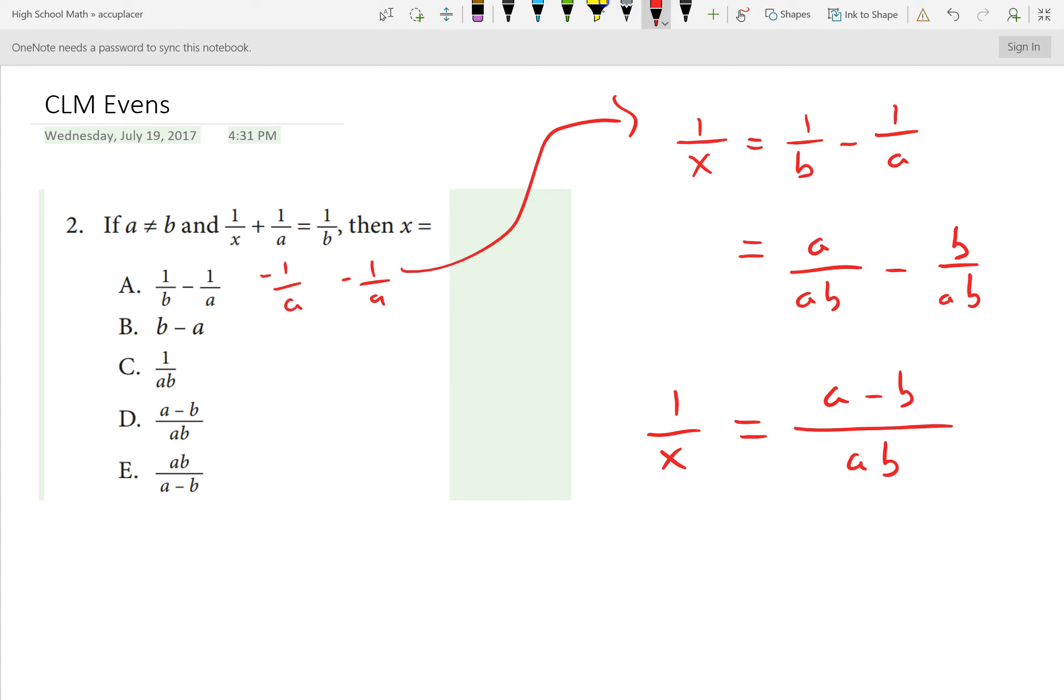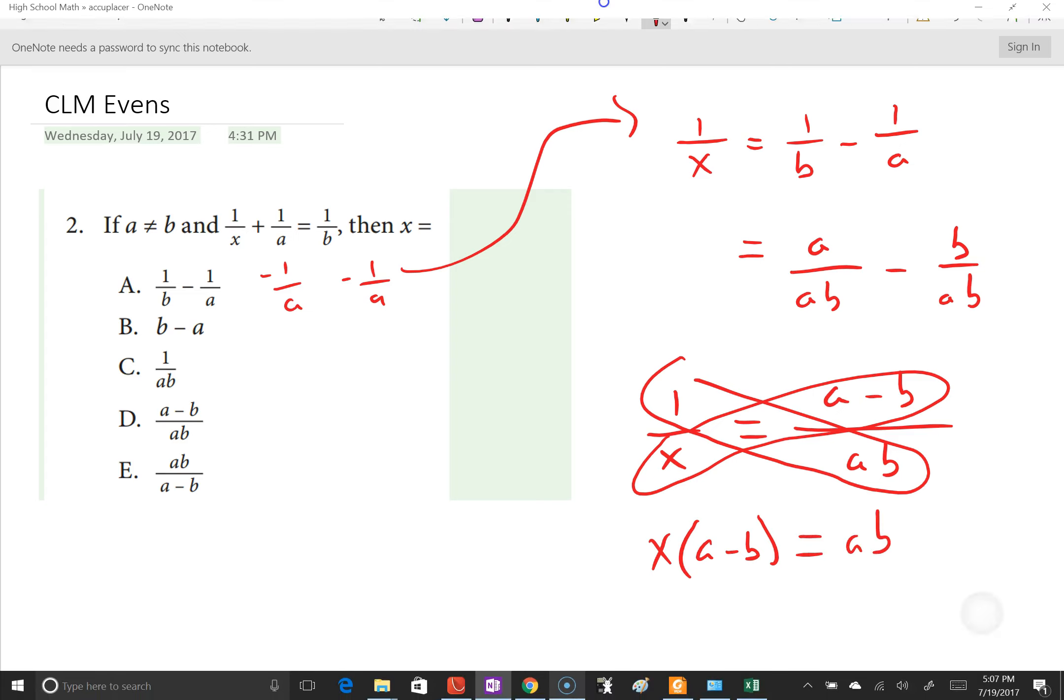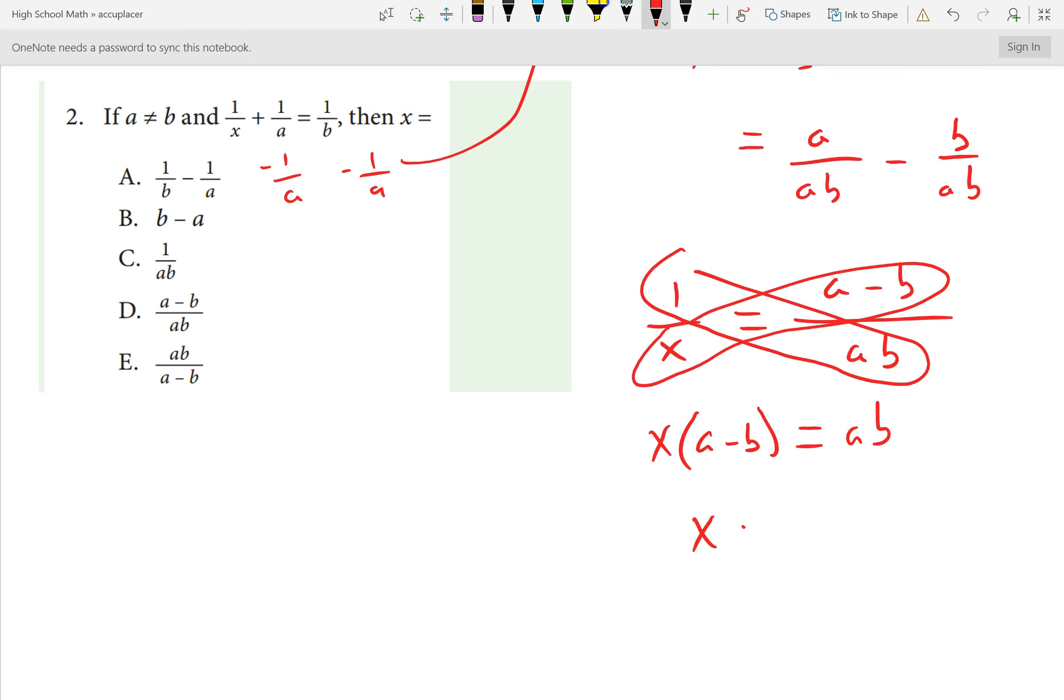Cross multiplying at this point, x times a minus b equals ab. Now, solving for x, I'll divide by the binomial parentheses, a minus b. So, x is equal to a times b, divided by a minus b. And that appears to be E. That concludes this video.